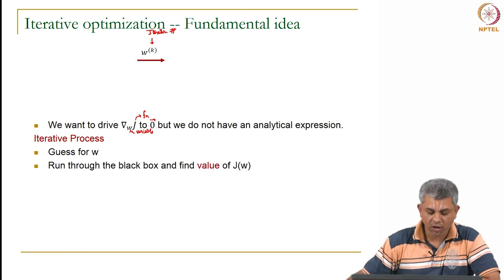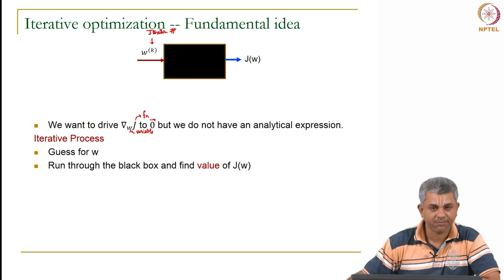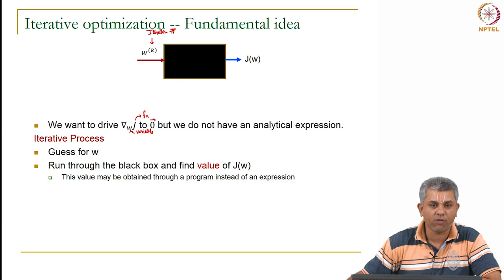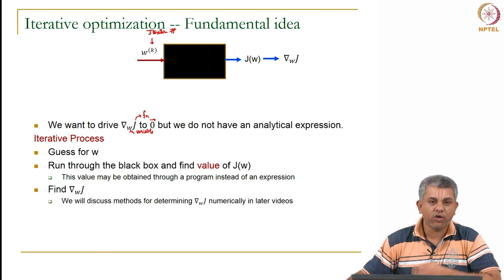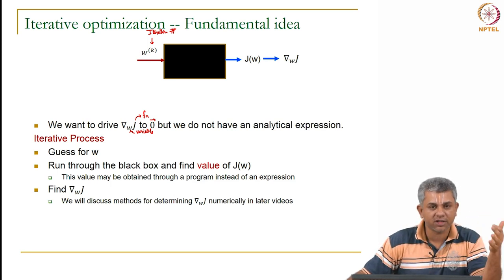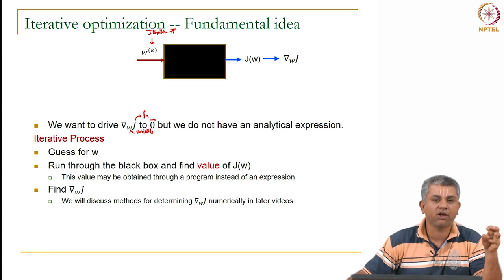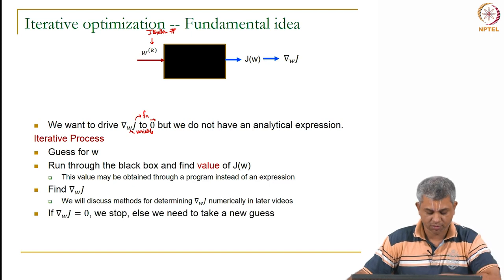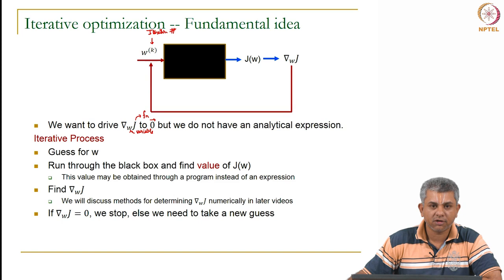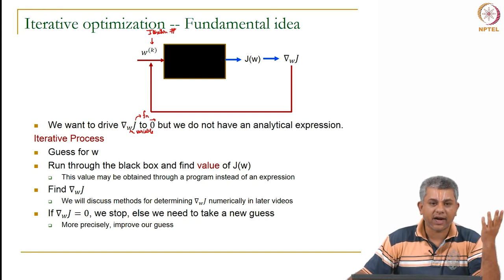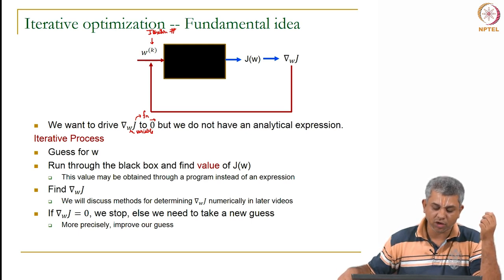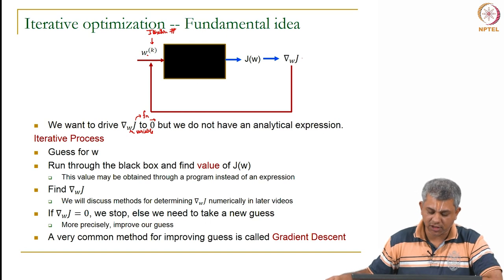So you take a guess, run it through the black box, and this gives you a value of j. This might or might not be the optimal value — if you were a really good guesser you will automatically get the right value, but generally you will not. Then you find out the gradient of w. A question might arise: if you only have the function as a black box, how are you going to find out the gradient? We will discuss this in the subsequent video, but assume that you have a method of finding out not only j but also the gradient of j as a number. If this gradient turns out to be zero you stop; if not, you take a new guess. It turns out that there are specific methods to find improved guesses — based on the w you got and the grad j you got, you can actually get a better guess. This method of improving your guess is what is called gradient descent.